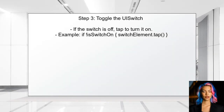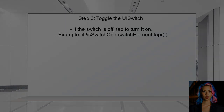After determining the current state, the user can toggle the UISwitch to a predetermined state. If the switch is off and needs to be on, the user can tap the switch to change its state.